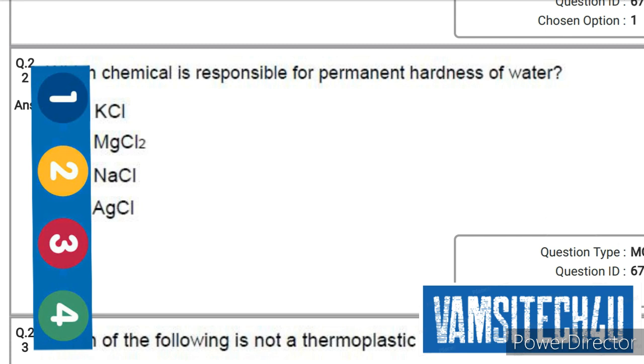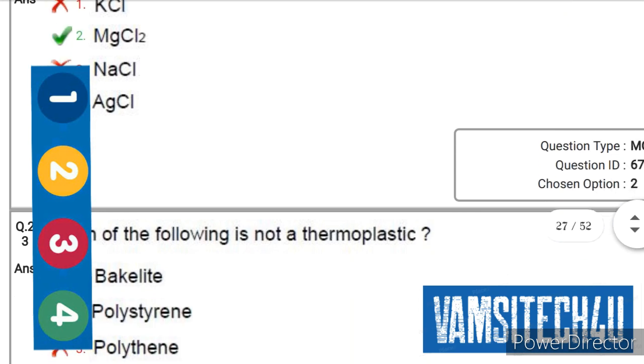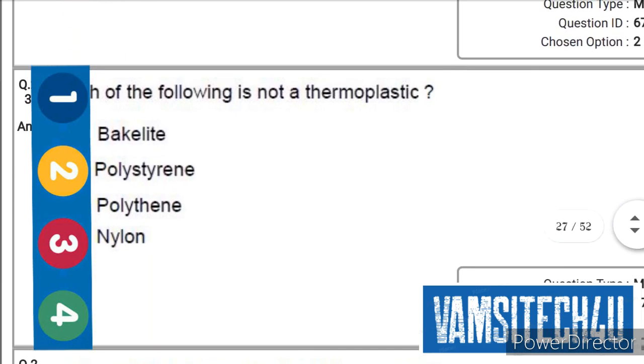Which chemical is responsible for permanent hardness of water? Magnesium chloride, that is second option.